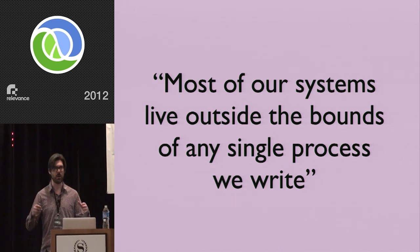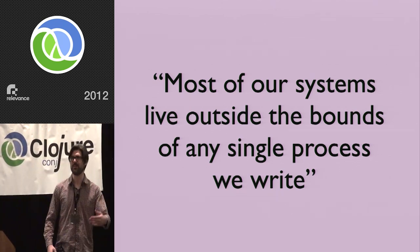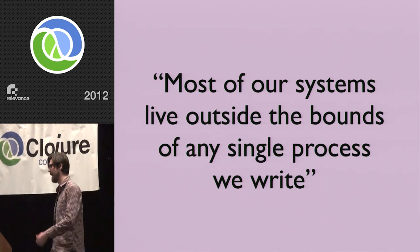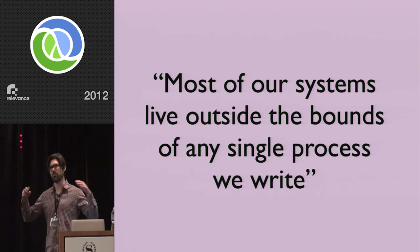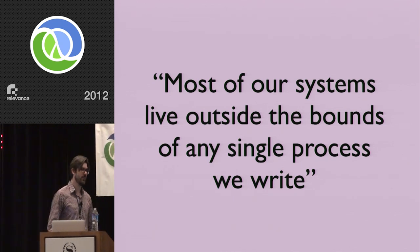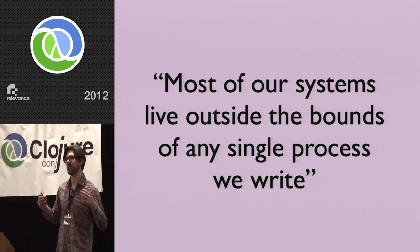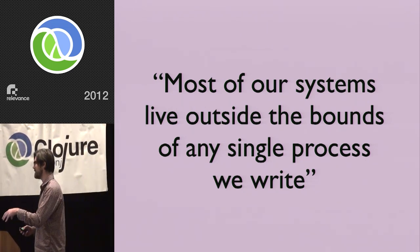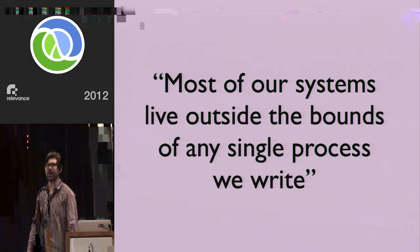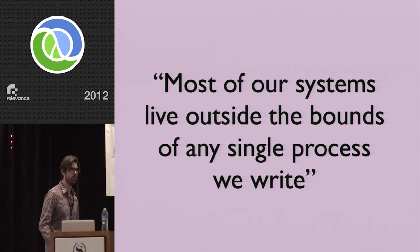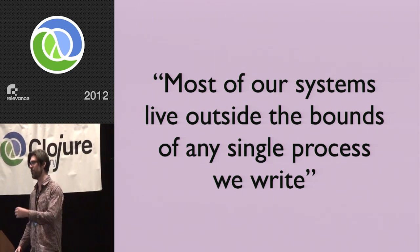The point he was making was: no matter how nice it is inside the bubble — inside of our individual process where we have the facilities of Clojure and the state identity management situation — these processes live in a broader system. That broader system can potentially reach into our process and make things complex for us there, even with those facilities. The canonical example is the database: complexity in the database reaches into our individual process and makes it harder for us there.